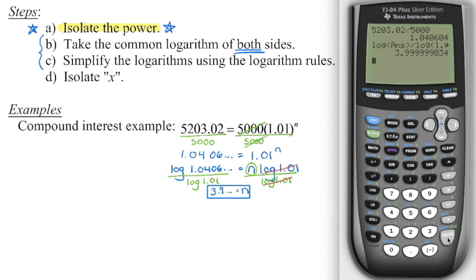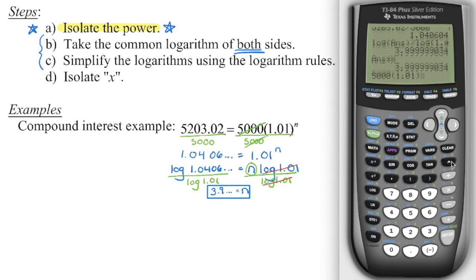Always in algebra, verify by substituting back in. Once you have your answer, press store to store it as the variable, so every time you press that variable key it puts the full value in — including all the digits you can't see. Then enter the left side and right side into the calculator: 5,000 times bracket 1.01 to the power of the variable. Check that you end up with the same value as the other side of the equation. If you do, you know you did it correctly.